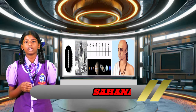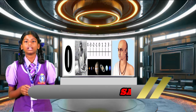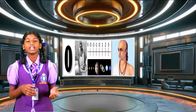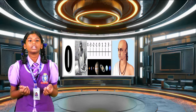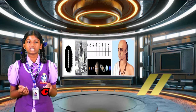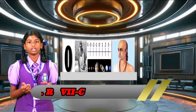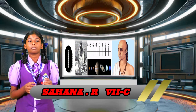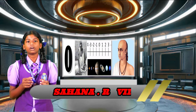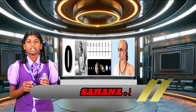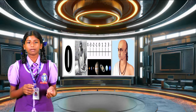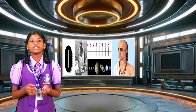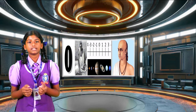Brahma Gupta was born in 598 in Gujarat, in the city of Binmar, that is presently in North West Rajasthan. He wrote important works on mathematics and astronomy. In particular, he wrote Brahma Gupta Siddhanta, the opening of the universe, in 628. The book contains 25 chapters.